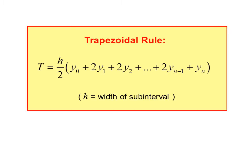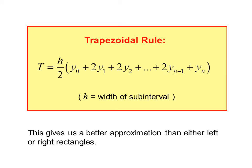This is the trapezoidal rule: T equals h/2 times (y₀ plus 2y₁ plus 2y₂ plus ... plus 2y_{n-1} plus yₙ), where h is the width of a subinterval. This gives us a better approximation than either the left or right rectangles.